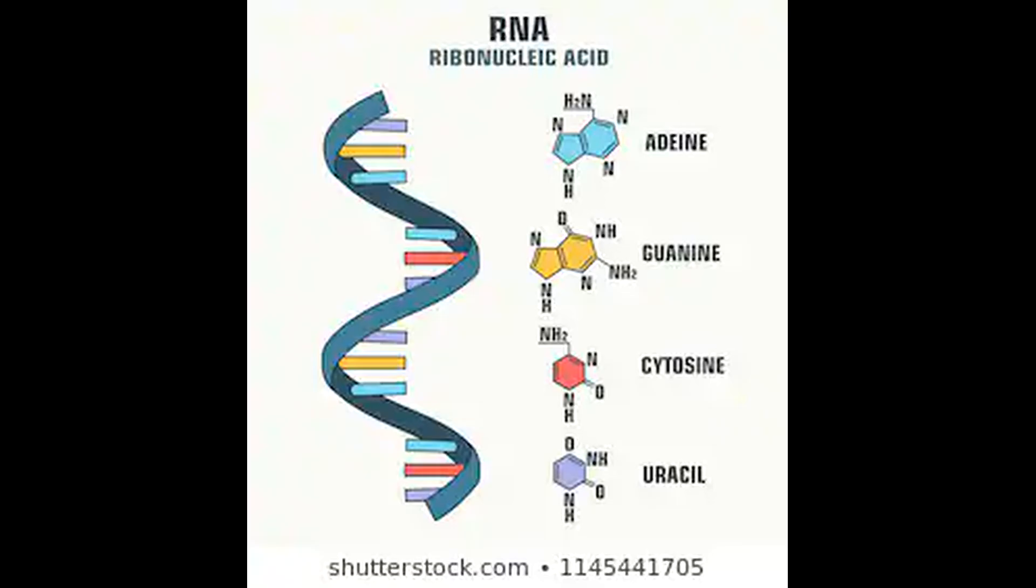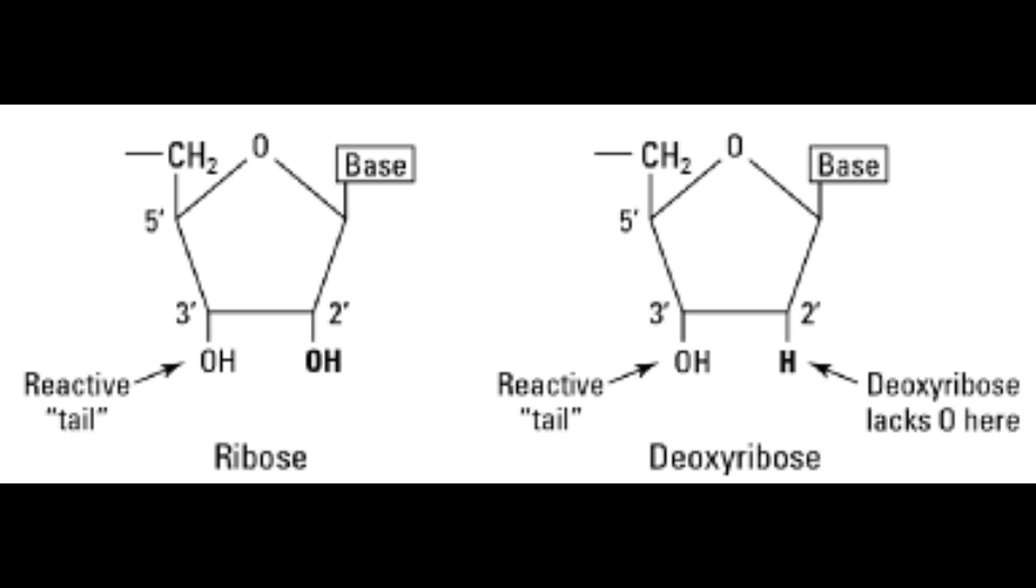In ribonucleic acid, which is abbreviated as RNA, the five-carbon sugar is called ribose. To form DNA, an oxygen atom is removed from the sugar. That's why its sugar is deoxyribose.